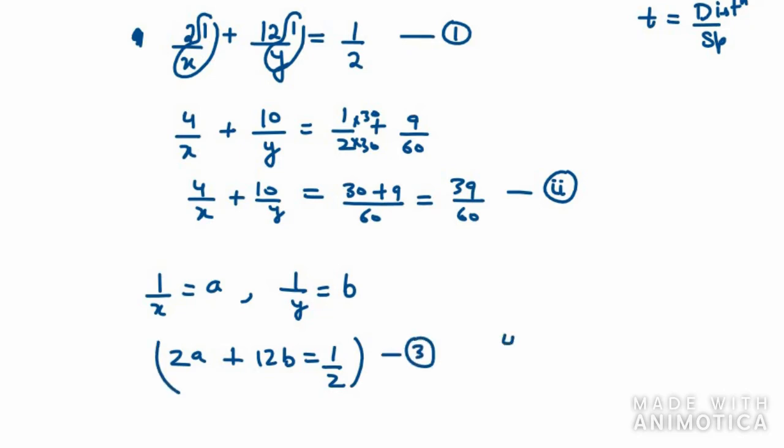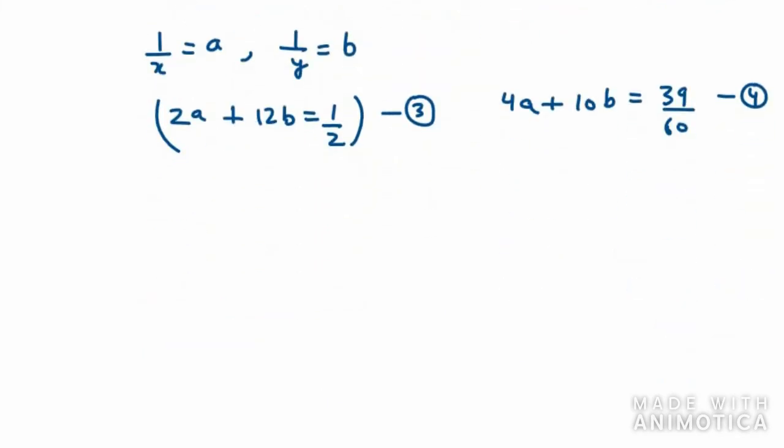Now changing second equation, it will be 4a plus 10b equals 39 over 60. Now we need to solve equation number 3 and 4 to find the value of a and b. Using elimination method, I need to make this term and this term same. For that, I need to multiply third equation with 2. So it will be 4a plus 24b equals 1. Why 1? Because 2 into half is 1. Now the fourth equation is 4a plus 10b equals 39 over 60.